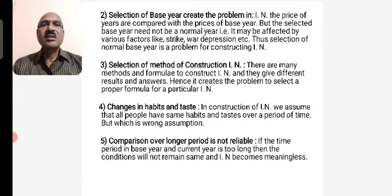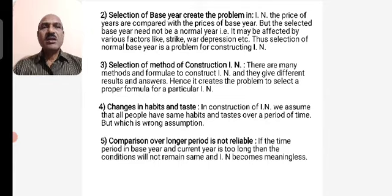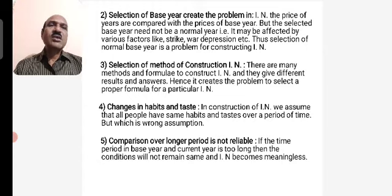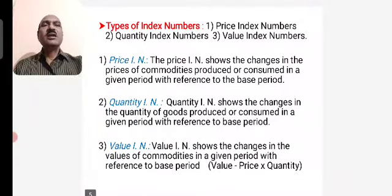Habits and tastes can change over time. When habits change, assumptions used in constructing the index become wrong, and therefore we do not get proper results. Comparison over a longer period of time also becomes problematic when the price index and quantity index change, making the index number meaningless. So these are the limitations of index numbers.